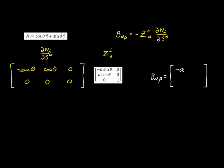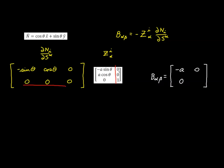The next element is this row times the second column: this one times zero plus this one times zero plus zero times one is all zero. Then this row times the first column — zero times each element — is also zero. Finally, this row times the second column — zero times each element — is zero as well.